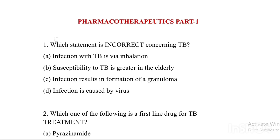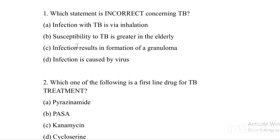First question: Which statement is incorrect concerning TB (tuberculosis)? Option A: infection with TB is via inhalation. Option B: susceptibility to TB is greater in elderly. Option C: infection results in formation of granuloma. Option D: infection is caused by virus. The answer is Option D — infection is caused by virus — because TB is a bacterial disease, caused by Mycobacterium tuberculosis.